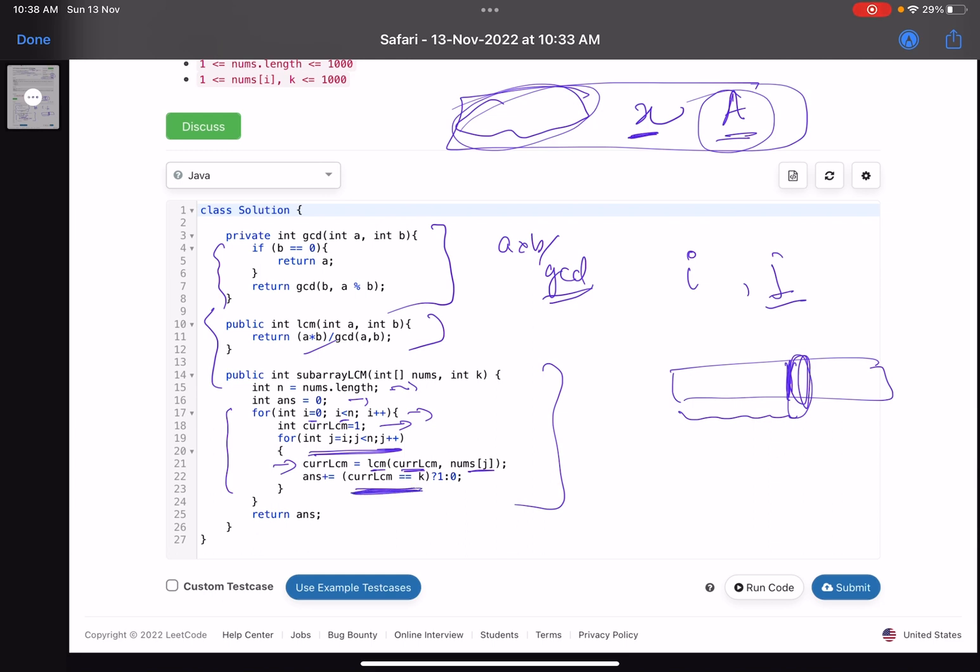After I find the LCM, I check if LCM equals k - if yes, add one to my answer because I found one more subarray following this condition. Finally, we return our answer.